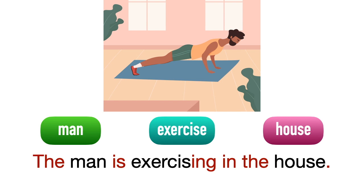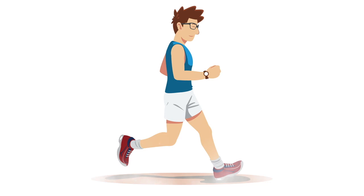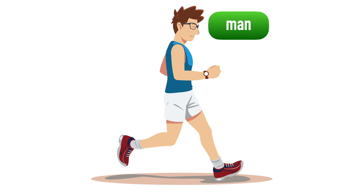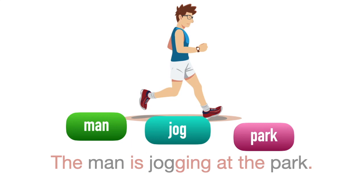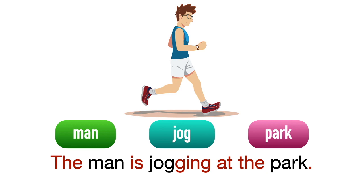The people is a man, the action is jog, and the place is park. The man is jogging at the park. Takkan kita kata 'The man is jogging himself at the park' — no. Jogging berdiri di atas dirinya sendiri.